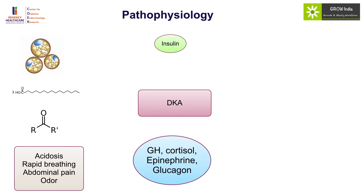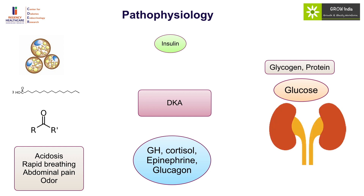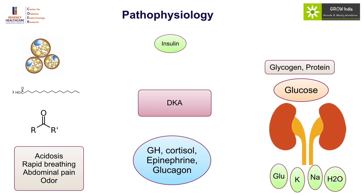The major impact of counter-regulatory hormone excess, along with insulin deficiency, is on the gluconeogenesis and glycogenolysis pathway, wherein there is increased production of glucose. Because of the osmotic diuresis effect, this causes loss of glucose, potassium, sodium, and water. So hyperglycemia and osmotic diuresis are largely responsible for severe dehydration observed in DKA, along with loss of sodium and potassium.